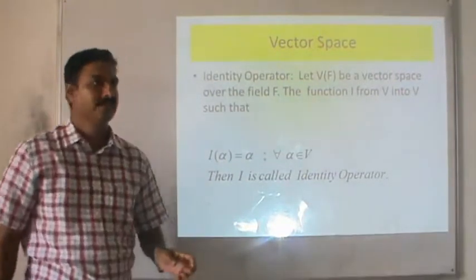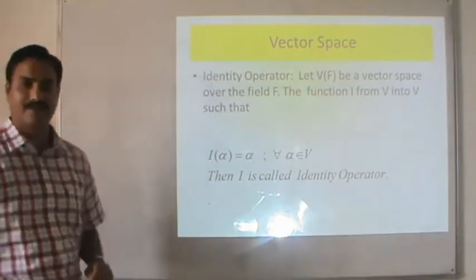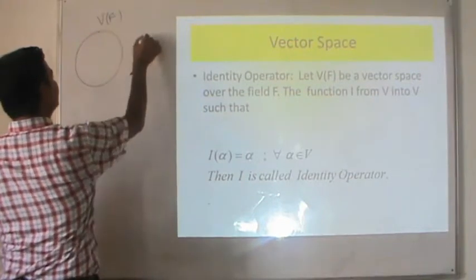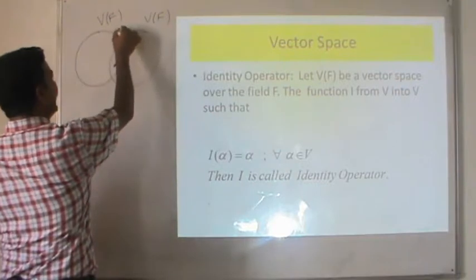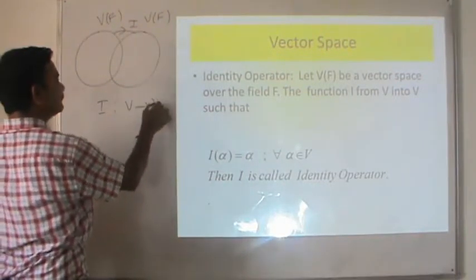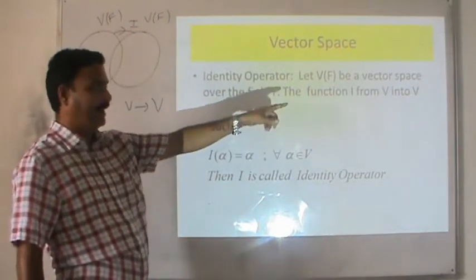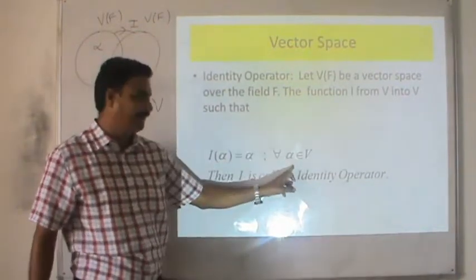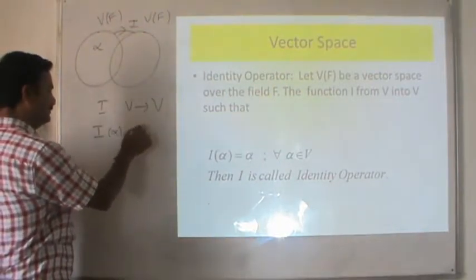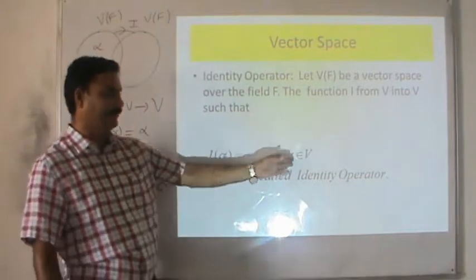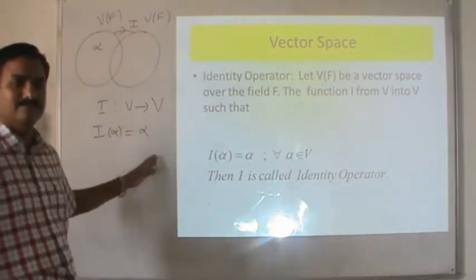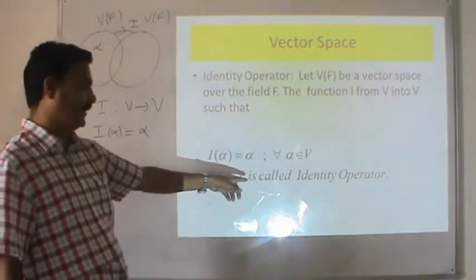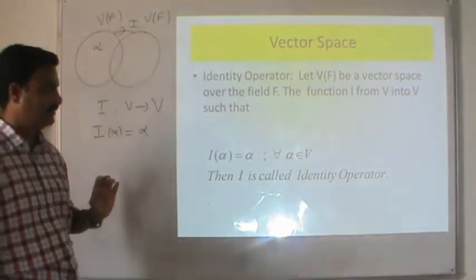The next definition is the identity operator. In the case of the identity operator, we have just one vector space. Let Vf be a vector space over field F and I a mapping from V to V such that I(α) = α for every α belonging to V. So I(β) = β, I(x) = x, and this type of operator I is called the identity operator, because the result gives you the same vector on which the operator is applied.